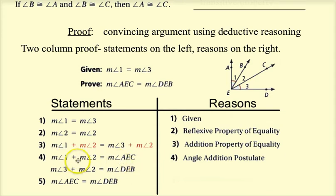And then, since I already know angle one and angle two equals angle three and angle two, and angle one and two equals AEC, and angle three and two equals DEB, I now know that the measure of AEC equals the measure of angle DEB, which is what I wanted to prove. You're done with the proof when the last step is what you were asked to prove.